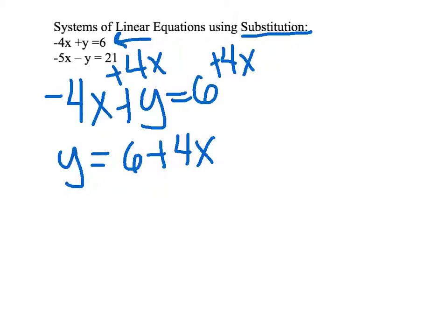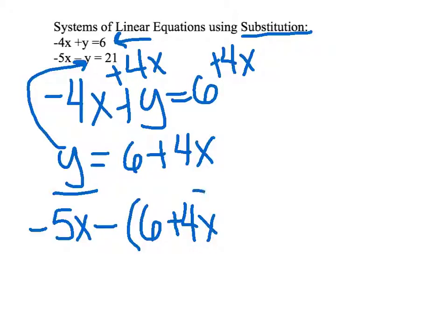Now that we have one equation solved for y, let's substitute it in for y in the other equation. So we will have negative 5x minus y. Well we solved for y. So let's plug in what we found y equaled, 6 plus 4x. And that will equal 21. Here we have our first equation substituted into our second equation.